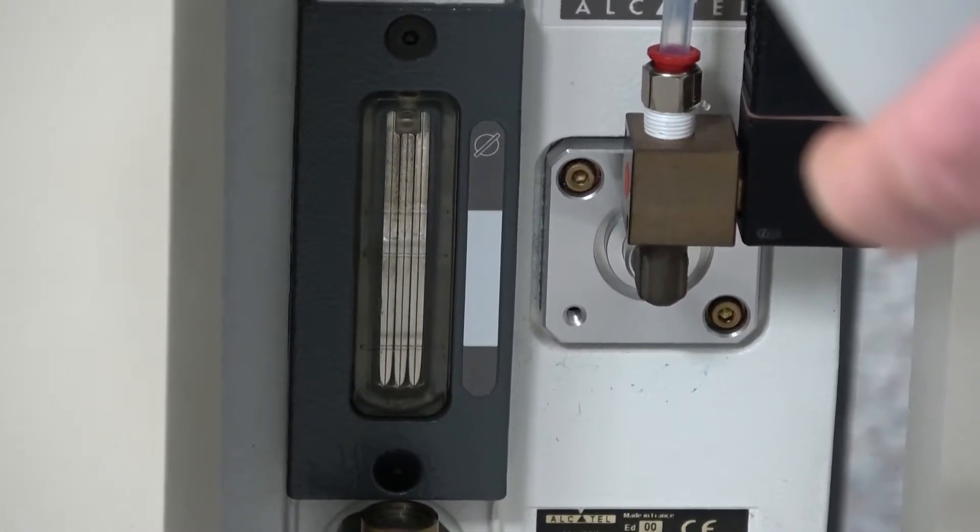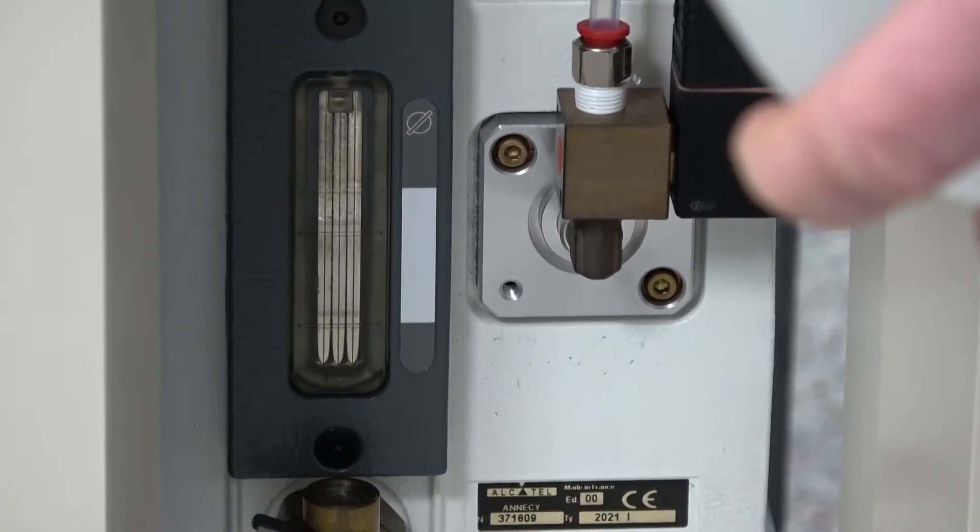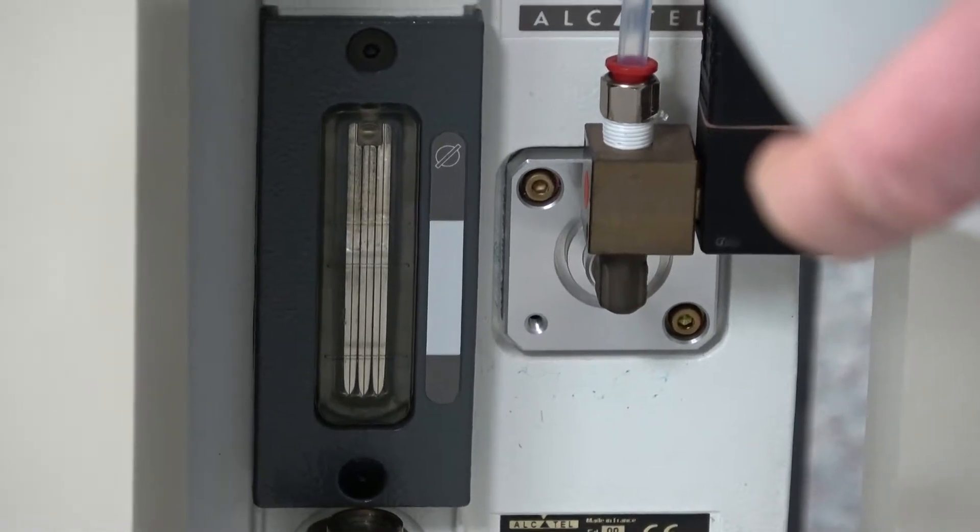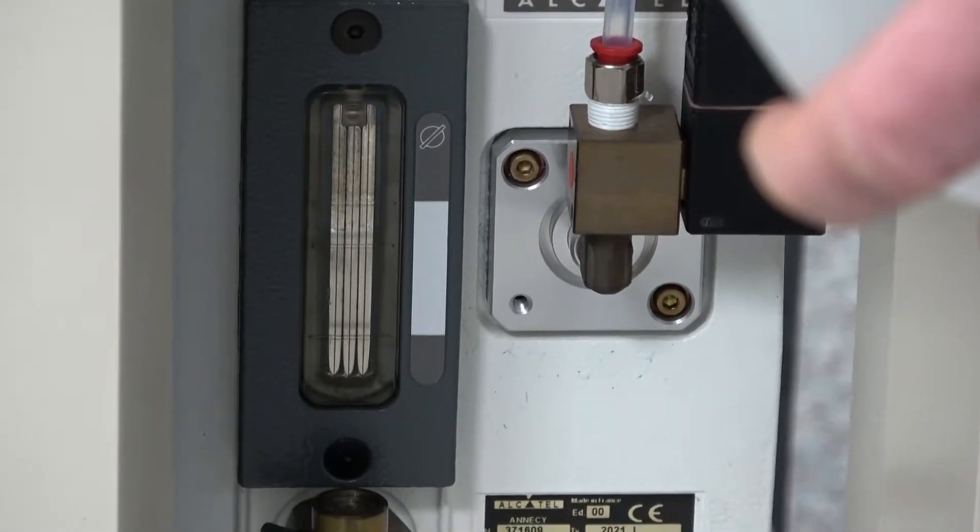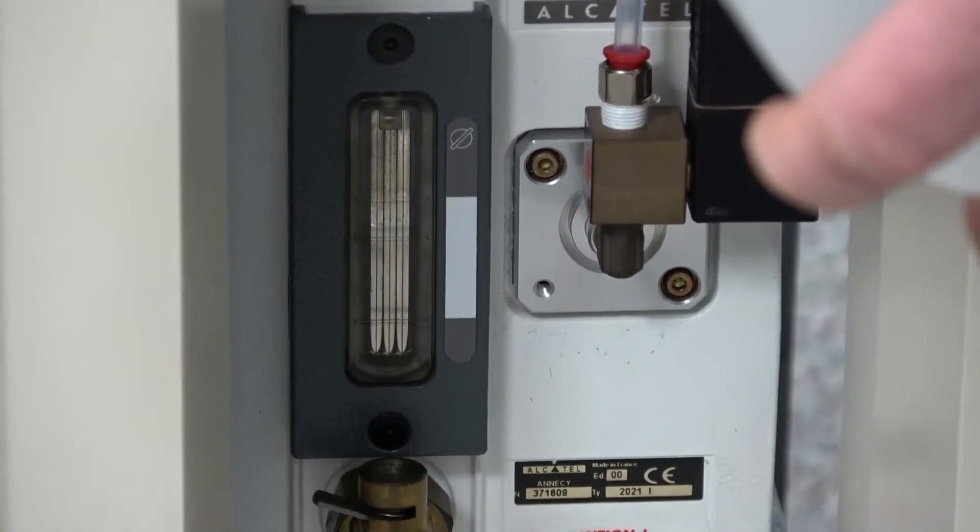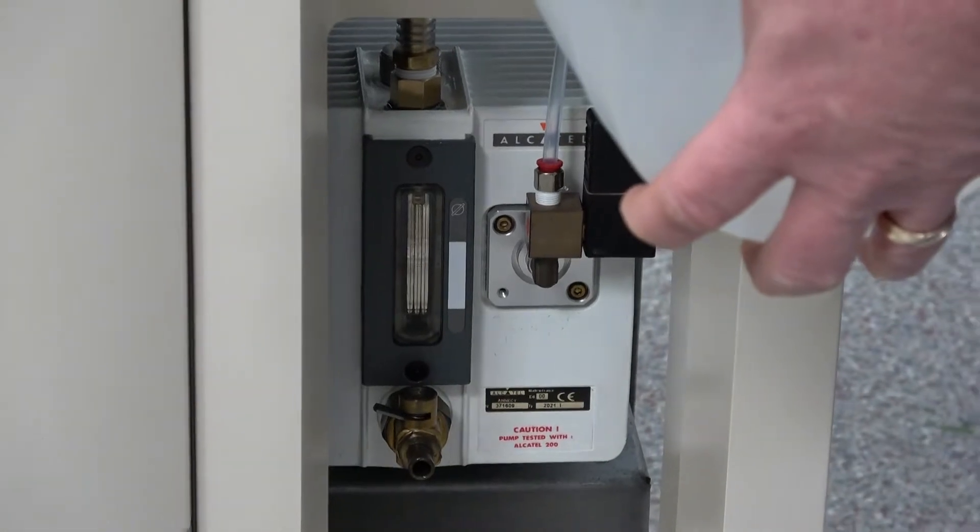Another thing you can do, what we do on some of our other vacuum pumps that I have in-house, is I actually put a pump dispenser on these so that I don't have to pour them like this - I just pump it in with a little pump dispenser. Which it's not really necessary because this is so easy.